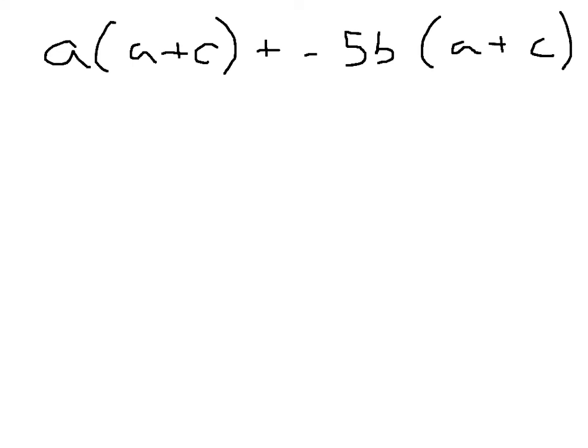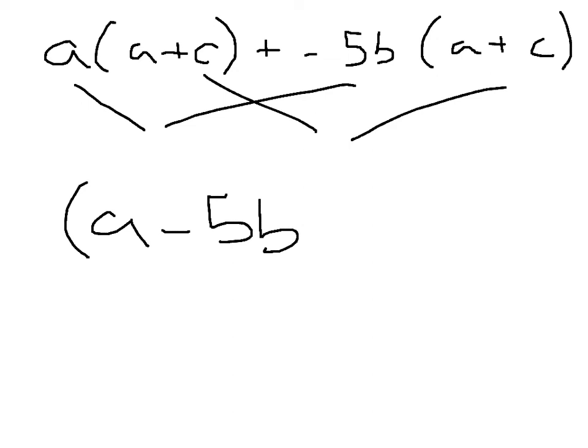So I just rewrote our problem, what we had from the previous slide. Changing the c plus a to an a plus c, just rewriting it so that we can combine like terms. And then the next step is to bring these two together and these two together to get our final answer of a minus 5b times a plus c.